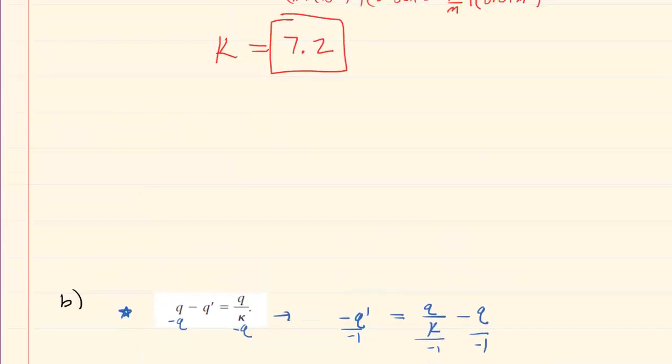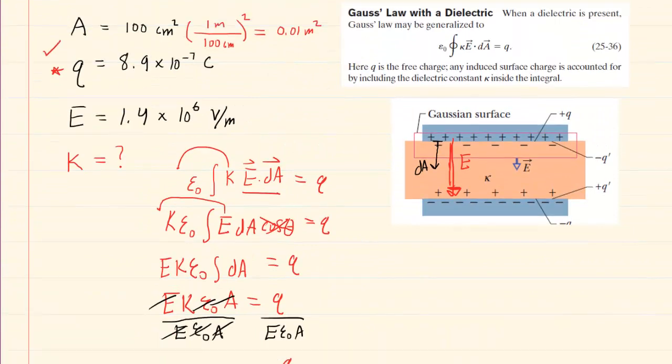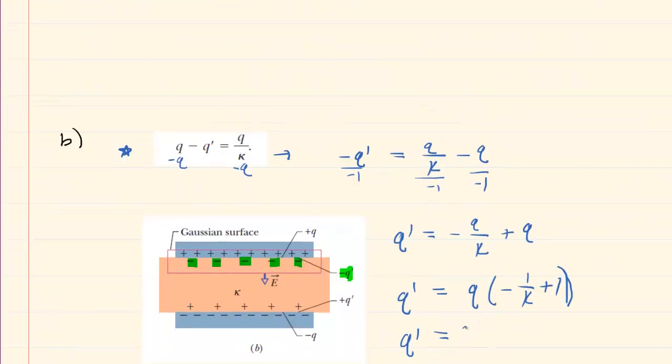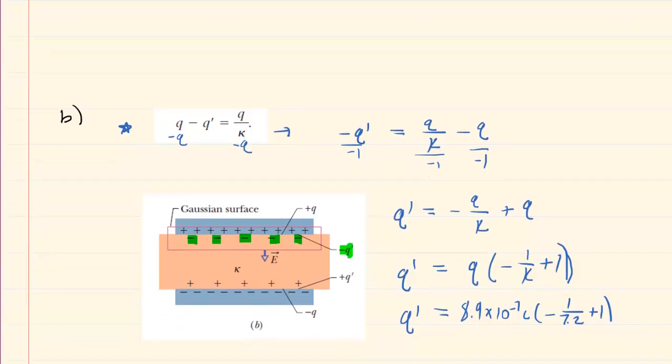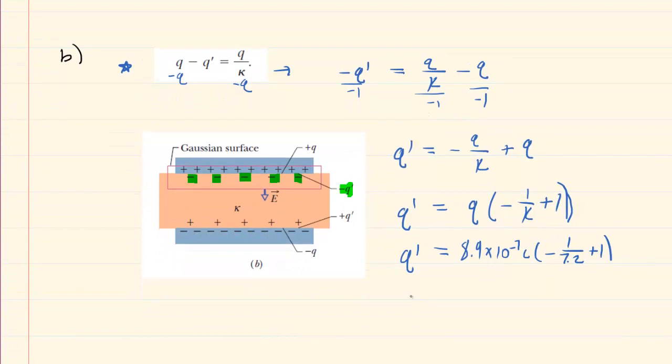And we recall that Q, the amount of free charge on each plate, was 8.9 times 10 to the minus 7. So let's plug this into our calculators, and this should get us the correct answer to part B. We end up with 7.66 times 10 to the minus 7. And that would come out to be in coulombs. And that would indeed be the correct answer to the question.